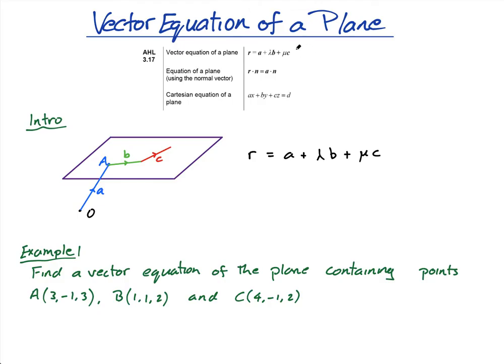We want to find the equation of a plane. Similar to a straight line, we need an equation that gets us to every single point on the plane. We start at the origin: A is the position vector of a point on the plane. With a straight line we moved along a direction vector B by lambda B, with lambda as the parameter, to reach all points.